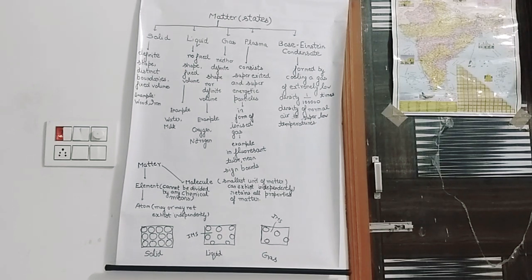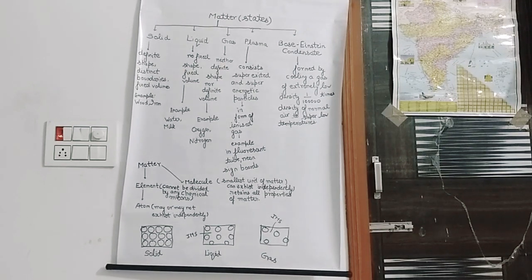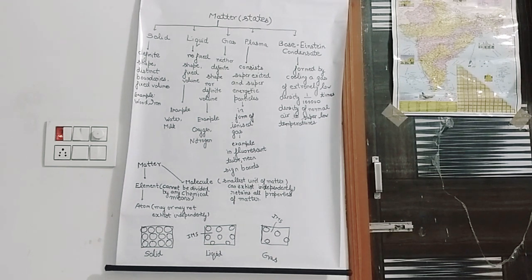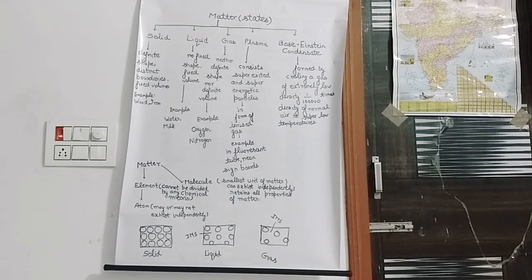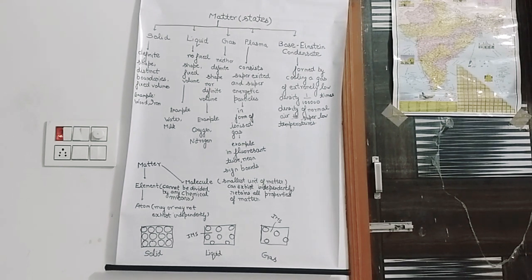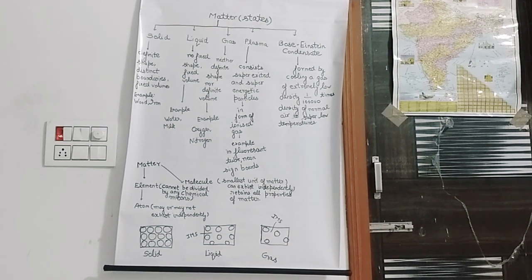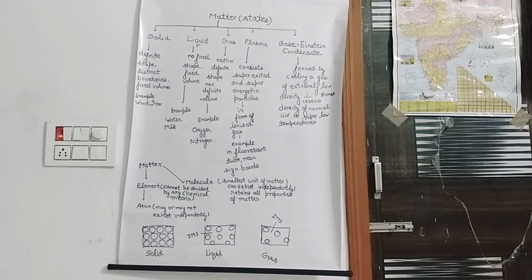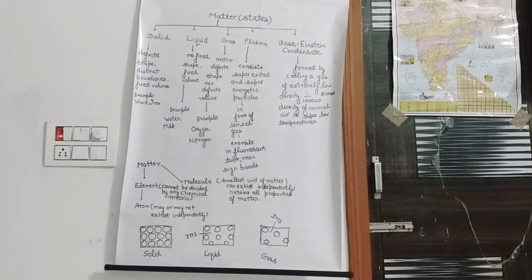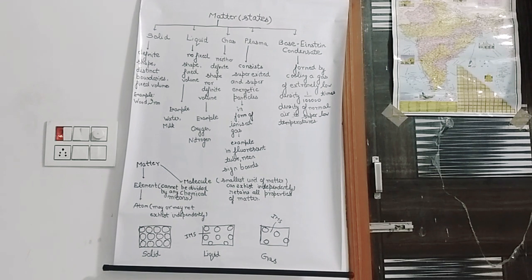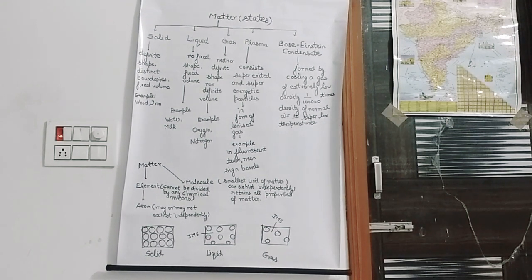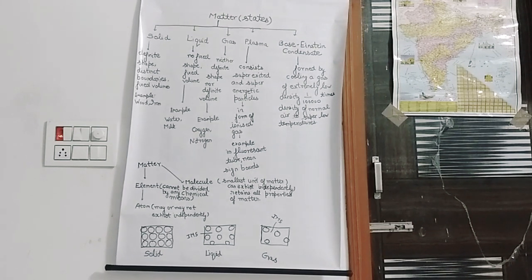I have made a classification of the states of matter. The three states you have been learning since class fifth or sixth are solid, liquid, and gas. Two more states are there that we are not studying in this syllabus, but you should have knowledge of them. So altogether there are five states of matter: solids, liquids, gases, plasma, and Bose-Einstein condensate.